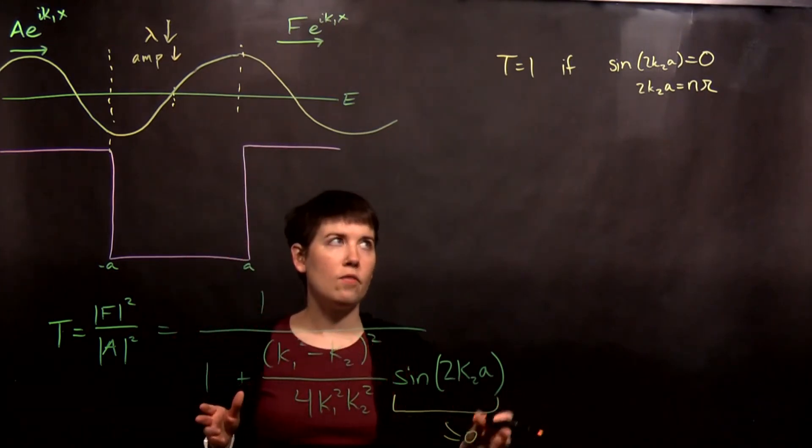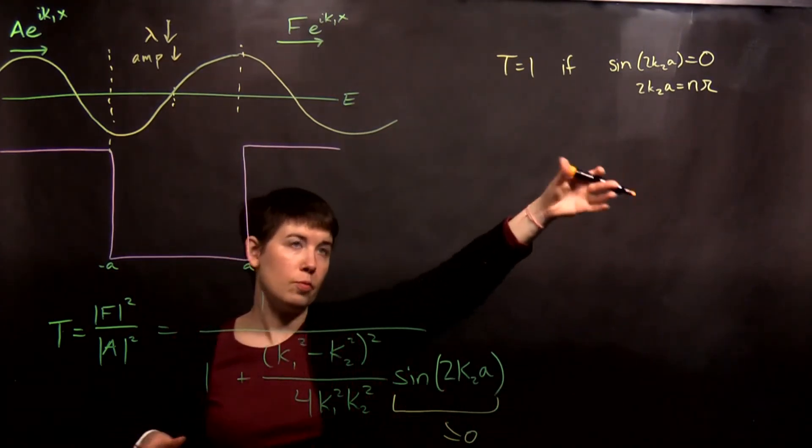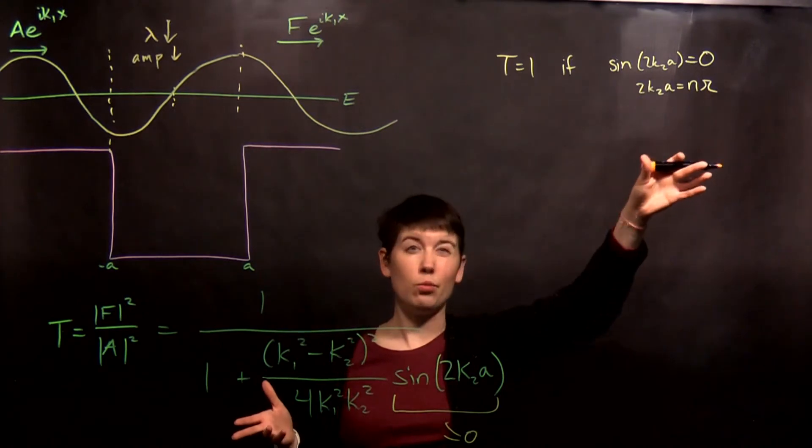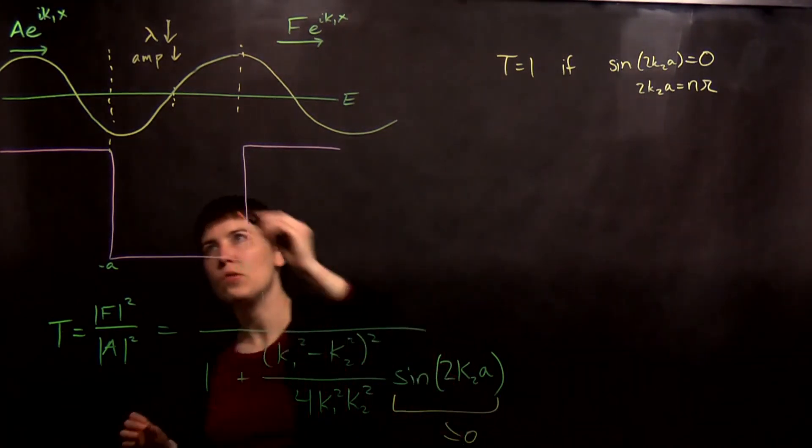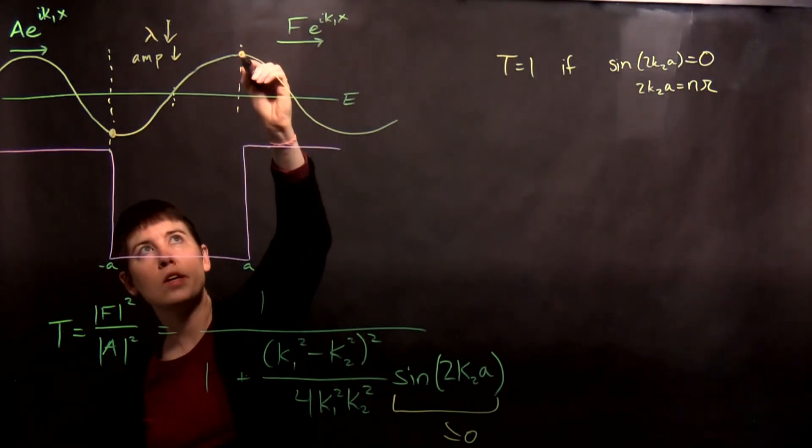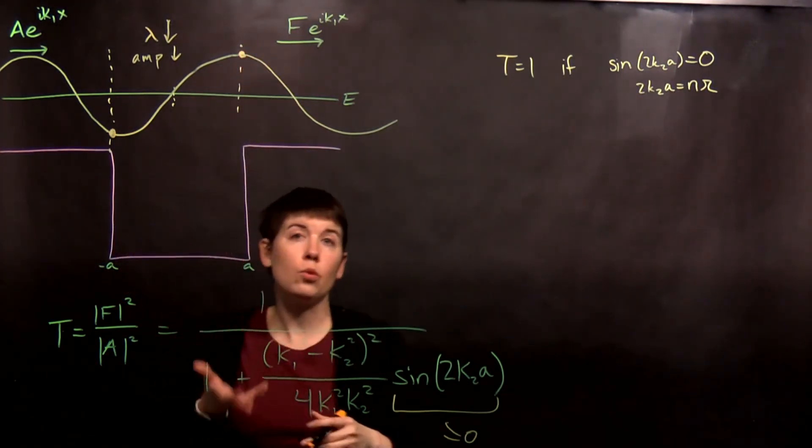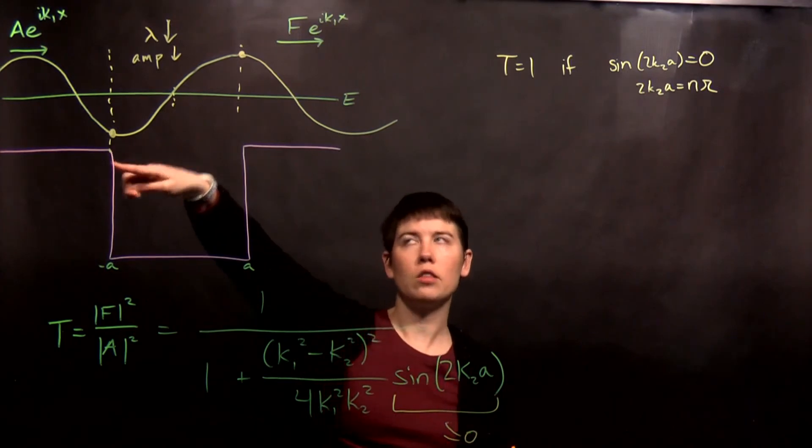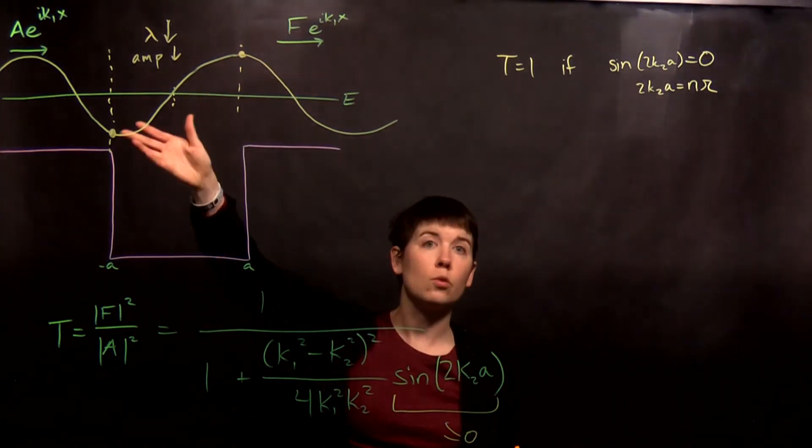But if you have an integer number of basically wavelengths, right? That's effectively what's happening here. Then what that means is there's a relationship between the point here and the point here such that they're equal in magnitude. Here I've drawn it as a way that we flip the sign but they're equal in magnitude.